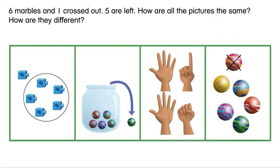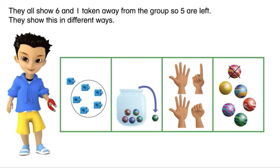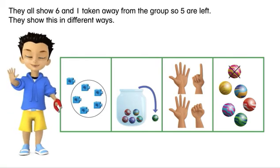How are all the pictures the same? How are they different? They all show six and one taken away from the group, so five are left. They show this in different ways.